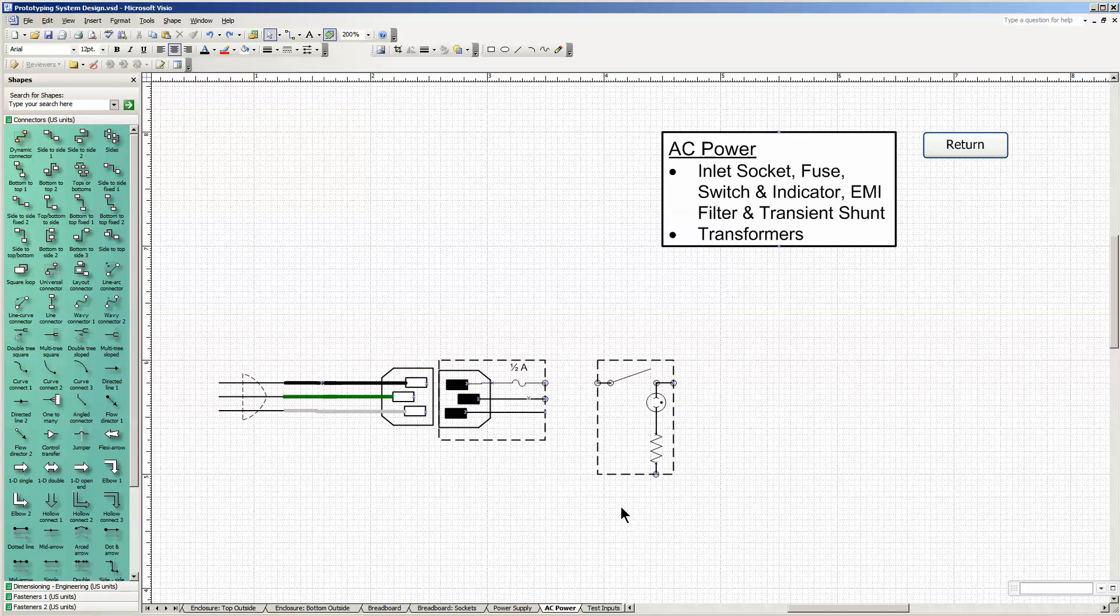I'm now going to add a single-pole, single-throw illuminated switch. The black hotline is being switched. When the switch is closed, current flows through a neon lamp into a current-limiting resistor and through the neutral line drawn in this diagram as gray. The green input ground will be connected to the enclosure.